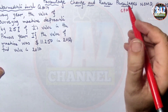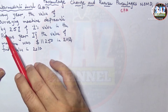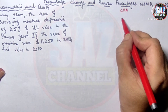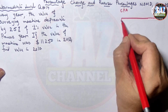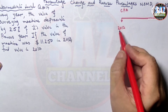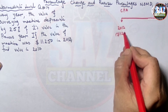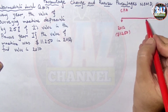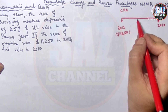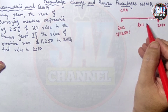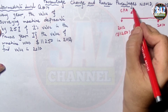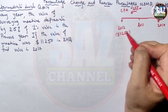I will make a diagram to understand the question. The value of the surveying machine is depreciating, decreasing by 25% of its value in the previous year. The years under discussion are: 2012, where the value is 11,250; 2011; and 2010, which we need to find. Every year the value decreases by 25%.